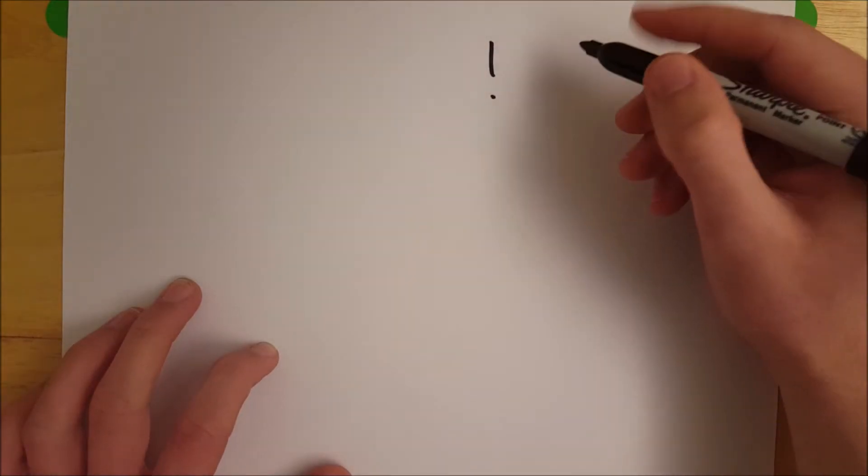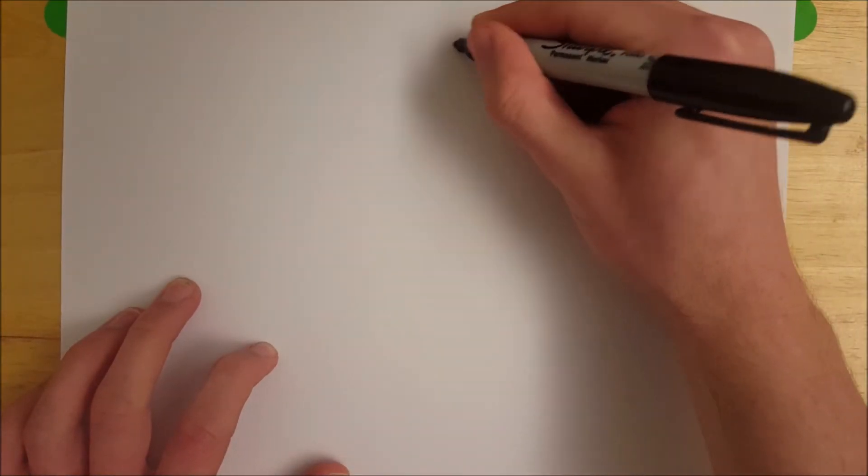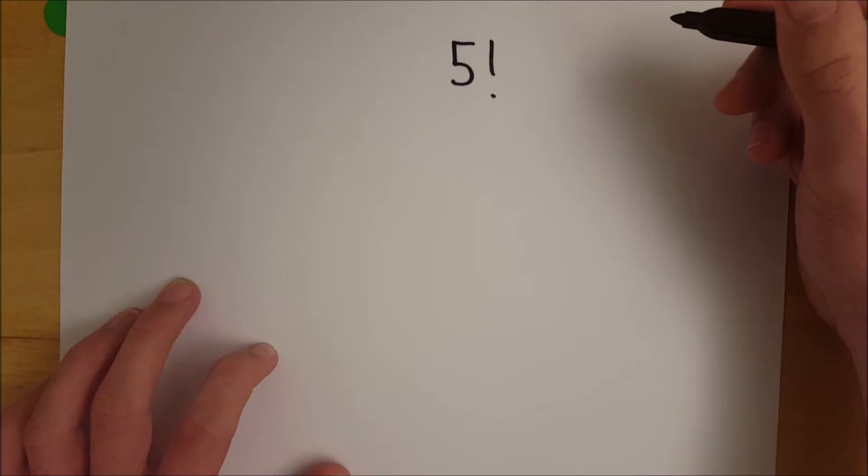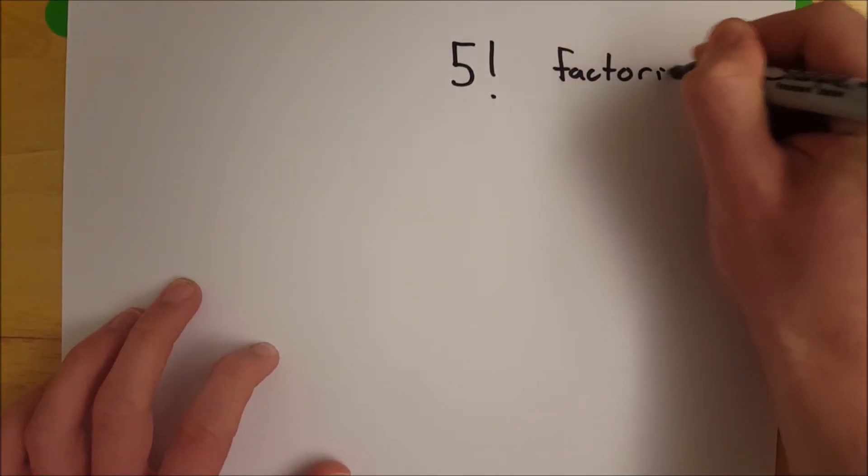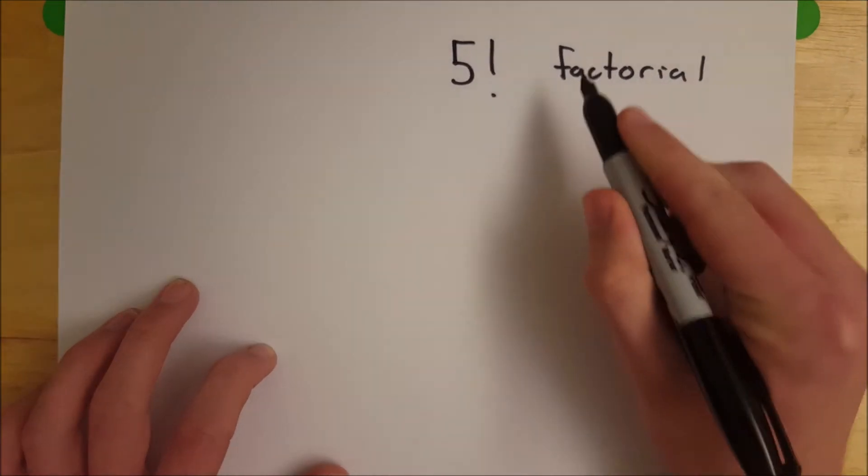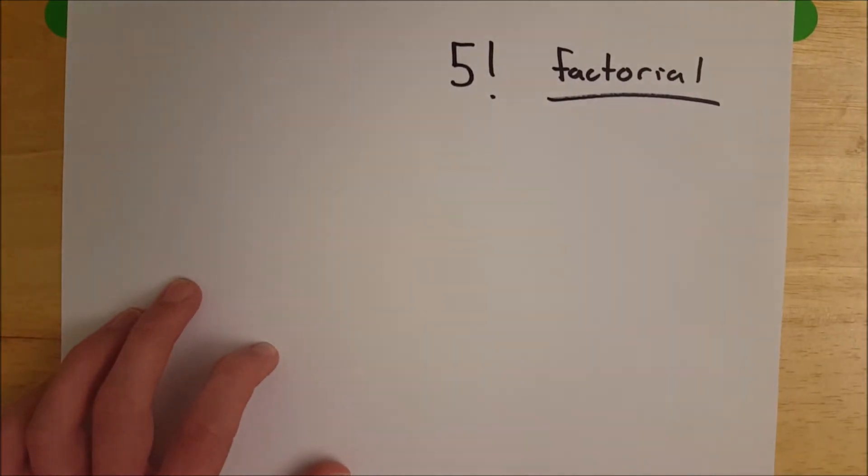Well, it's called a factorial. So if we have five exclamation point, that reads five factorial. Let's spell it out. Very cool vocabulary word. That's F-A-C-T-O-R-I-A-L, factorial. What does it mean?